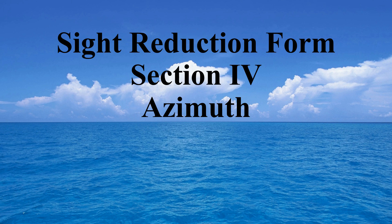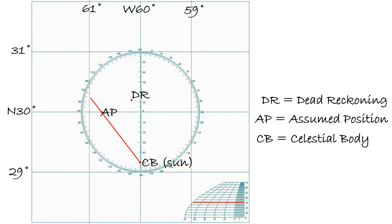In this video, we'll explain how to calculate the azimuth, the final part of the site reduction form. Remember, the azimuth is aligned through your assumed position leading to the geographic position of the celestial body. We need to calculate the angle of the azimuth, which we'll measure using the compass on the position plotting sheet.